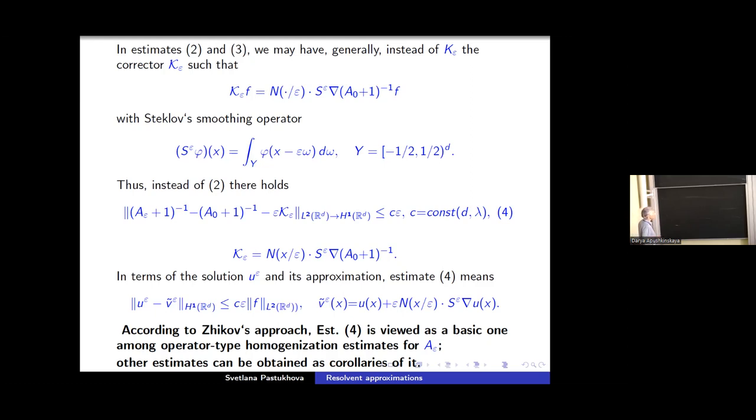You may use another type of smoothing operator with arbitrary smoothing kernel sufficiently regular in this situation. And so estimate two becomes in such a form general case, according to Zhikov approach. Which estimate four can be considered as the base, as the basic one among all operator type homogenization estimates. It's fine because other estimates can be obtained from it as corollaries. Some of them are trivial and some not so trivial, for example, if you consider the norm from this norm come to L^2 operator norm, then you can consider correcting term as remainder term, discard this term. And in the self-adjoint case, you can show that smoothing can be omitted from corrector.